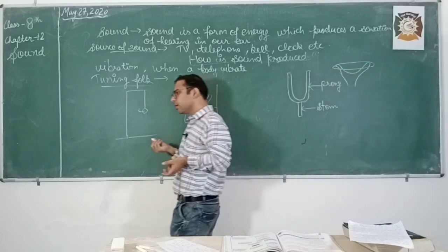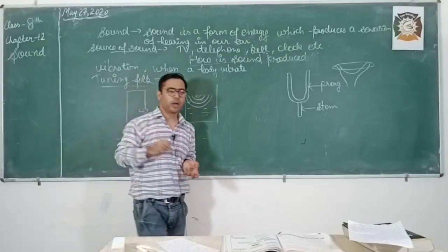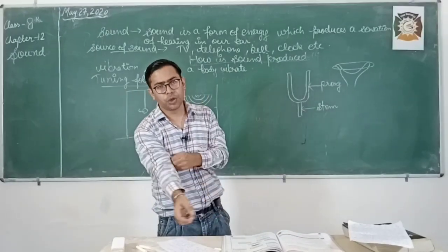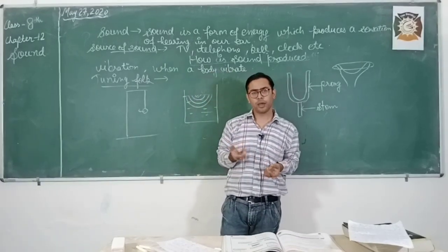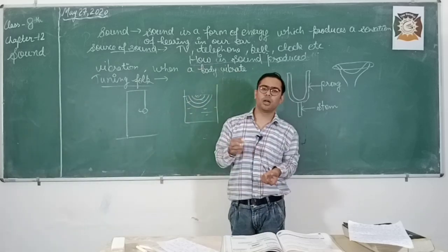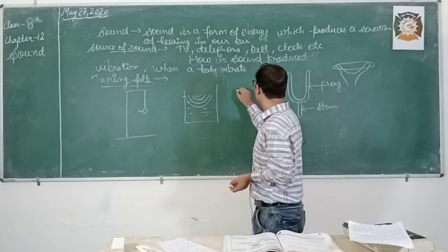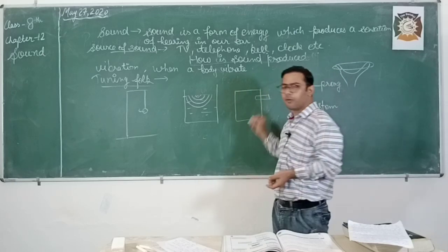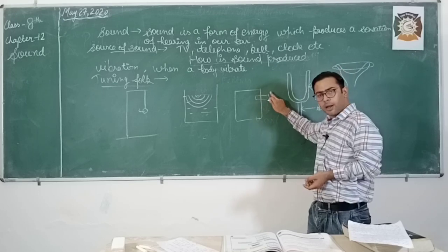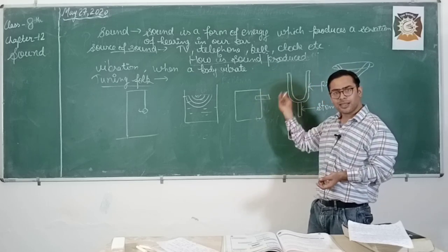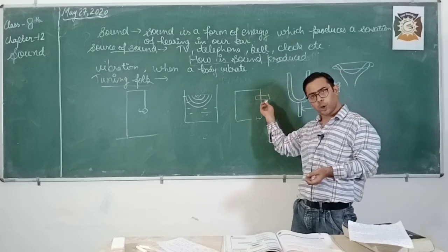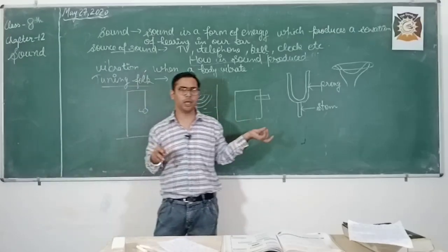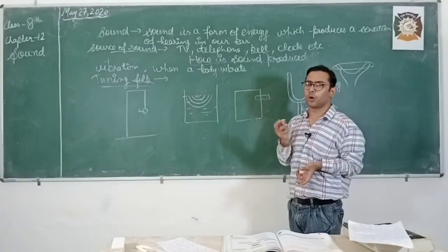I am going to tell you two activities by which you can produce sound at home very easily. First activity: take a ruler or metal scale from your geometry box. Place the ruler at the edge of a table. Now push the scale so that it starts moving up and down — it starts vibrating. In this way, you will hear some small type of sound. This is one activity you can easily do at home.